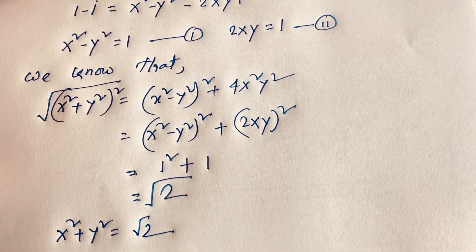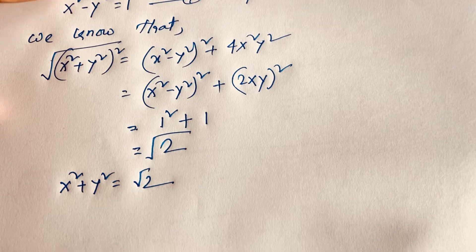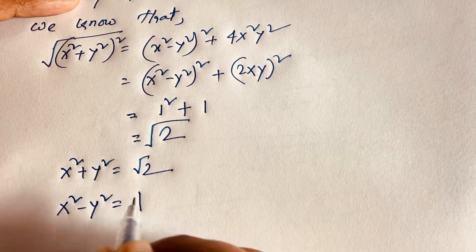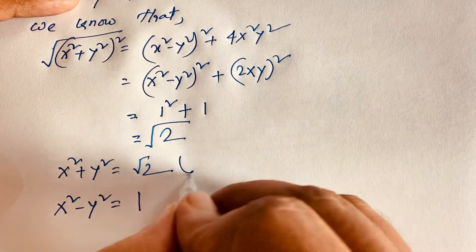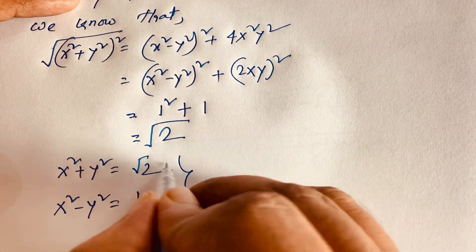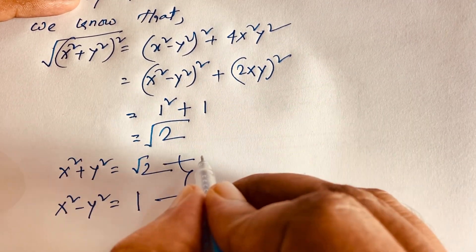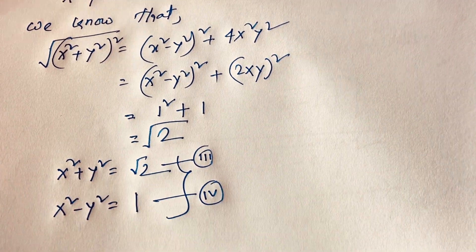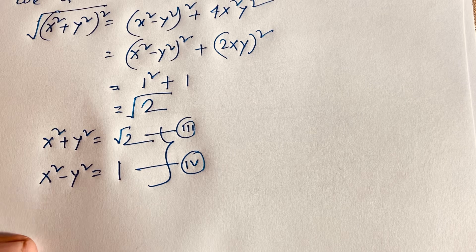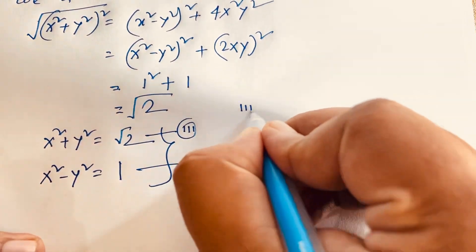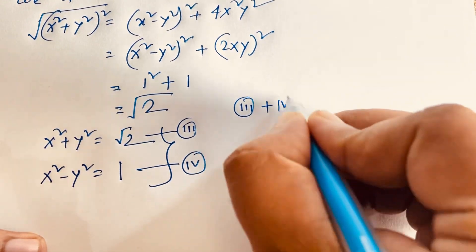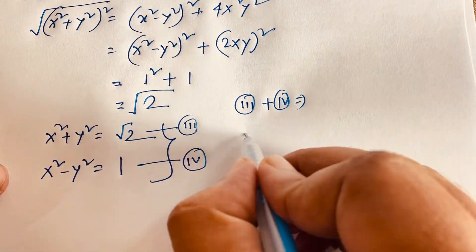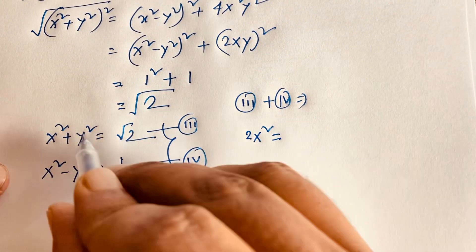So we have x² plus y² equals √2 (third equation) and x² minus y² equals 1 (fourth equation). Adding these two equations together: 2x² equals √2 plus 1.